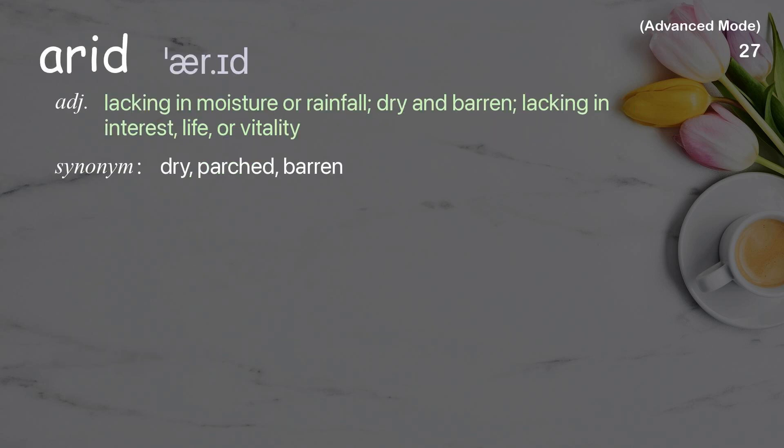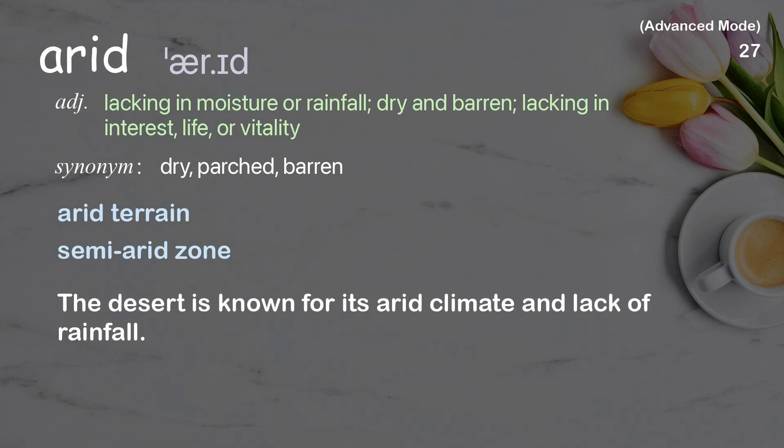Arid: lacking in moisture or rainfall; dry and barren; lacking in interest, life, or vitality. Examples: arid terrain, semi-arid zone. The desert is known for its arid climate and lack of rainfall.